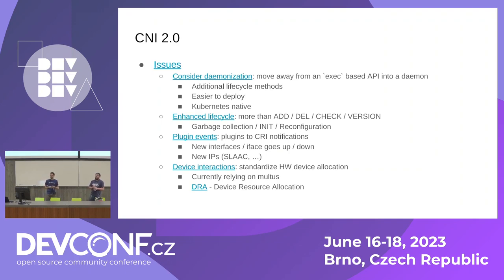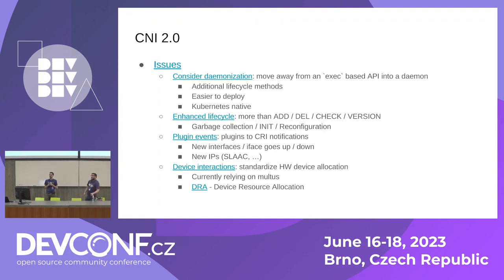You'll get an enhanced lifecycle. The most important thing is they're planning on adding a garbage collection verb — so instead of writing a controller to reconcile your IP addresses, for instance, there'll be a verb in CNI that does that for you. This will simplify life quite a lot. There's also plugin events — a way for CNI to feed information back into Kubernetes. For instance, if CNI sees that your pod got a new IP due to Slack, it will introduce that new IP to kubelet. And finally, device interactions.